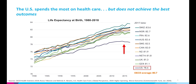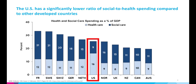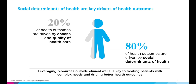This graph shows life expectancy between 1980 and 2018. The U.S. is at the bottom with an average life expectancy of 78.6 years. When we dig more into what healthcare spending goes towards, we see that the U.S. has a lower ratio of social to healthcare spending compared to other developed countries. This graph shows 9% going towards social care and 16% towards healthcare, with 9% being the lowest percent spent on social care of the countries listed. Although we spend less on social care, it's recognized that only 20% of health outcomes are driven by access and quality of healthcare. The remaining 80% of health outcomes are impacted by social determinants of health. Consequently, leveraging resources outside clinical walls is key to treating patients with complex needs and driving better health outcomes.